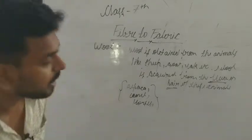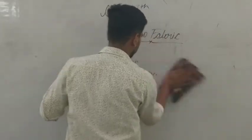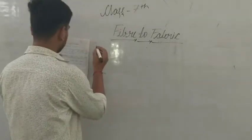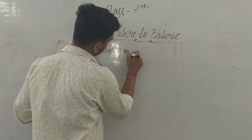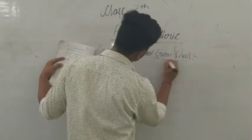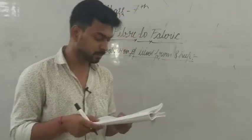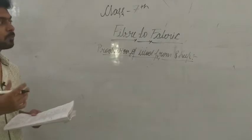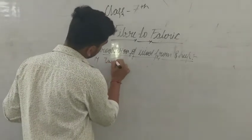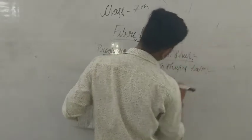Let's start with the production of wool from sheep. How is wool produced from a sheep's body? The fleece on the sheep's body has two types of fibers. First is rough beard hair, and second is soft under hair.